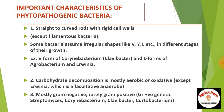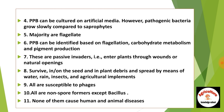Number three — most bacteria are gram negative, rarely gram positive. Gram positive examples include Streptomyces, Corynebacterium, Clavibacter, and Arthrobacter. Number four — plant pathogenic bacteria can be cultured on artificial media; however, pathogenic bacteria grow slowly compared to saprophytes.